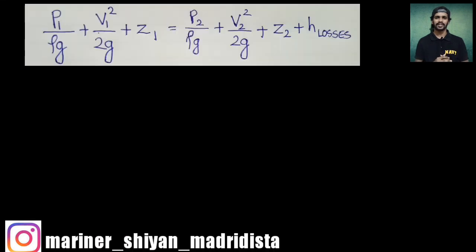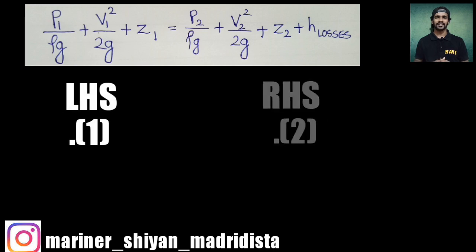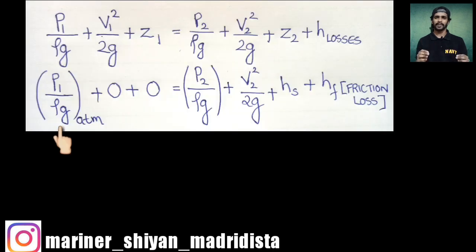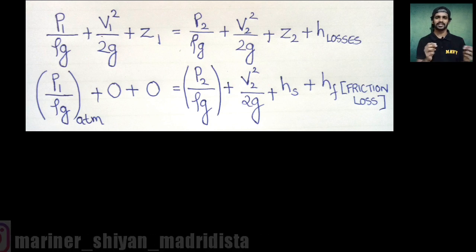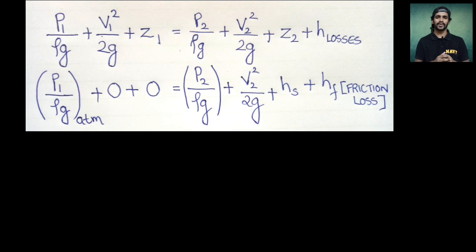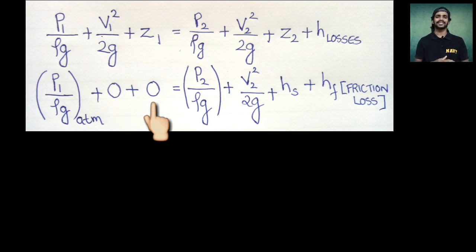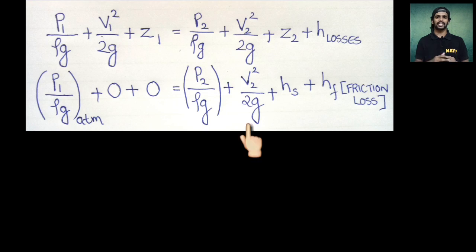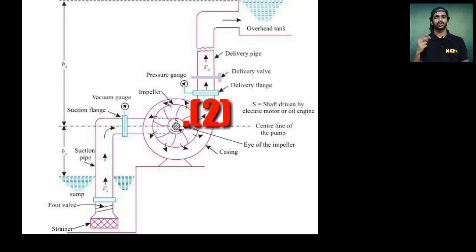Applying Bernoulli's equation: on the left-hand side at Point 1, P1/ρg is the atmospheric pressure — the pressure pushing water towards the eye of the impeller. The velocity at the sump is zero, so V1 = 0, making the second term zero. Z1 is also zero, as the head from sump to sump is zero.